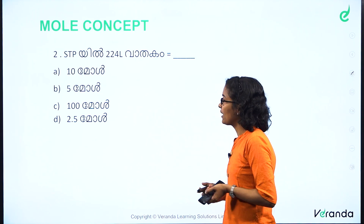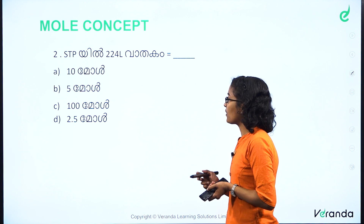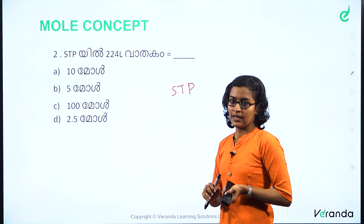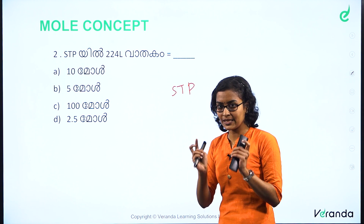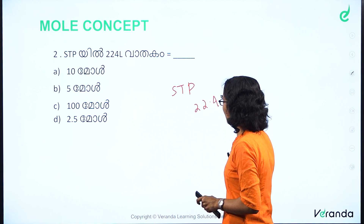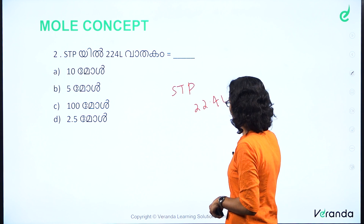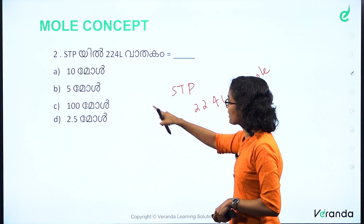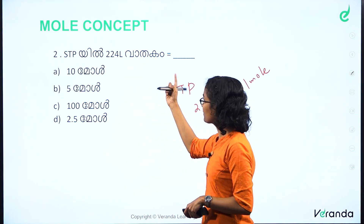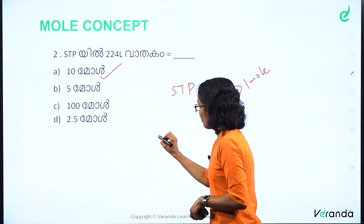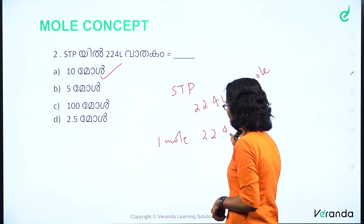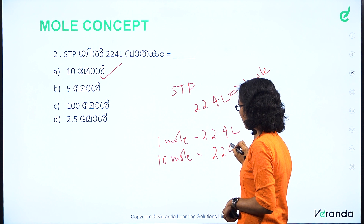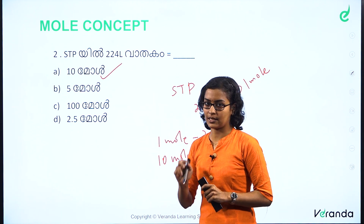If you have 24 litres at STP, how much is it? At standard temperature and pressure condition, 4 litres of gas at STP. If you have 22.4 litres at STP that is 1 mole, then 24 litres at STP — that's the correct option.